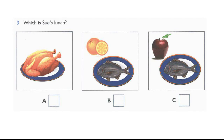3. Which is Sue's lunch? What are you having for lunch, Sue? Is it chicken? No, it's not. It's fish. And have you got an apple or an orange? An orange.